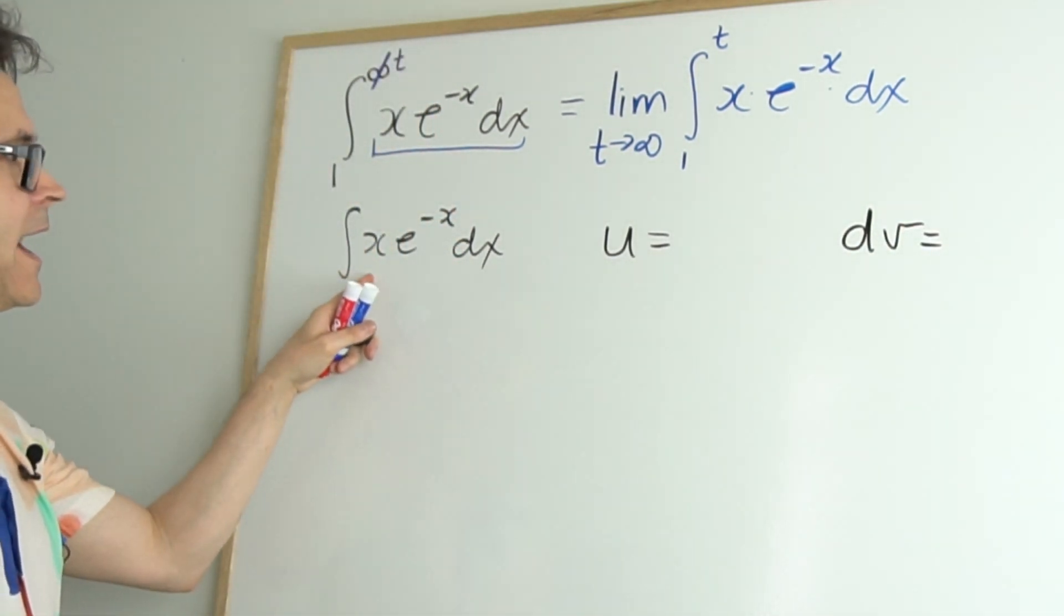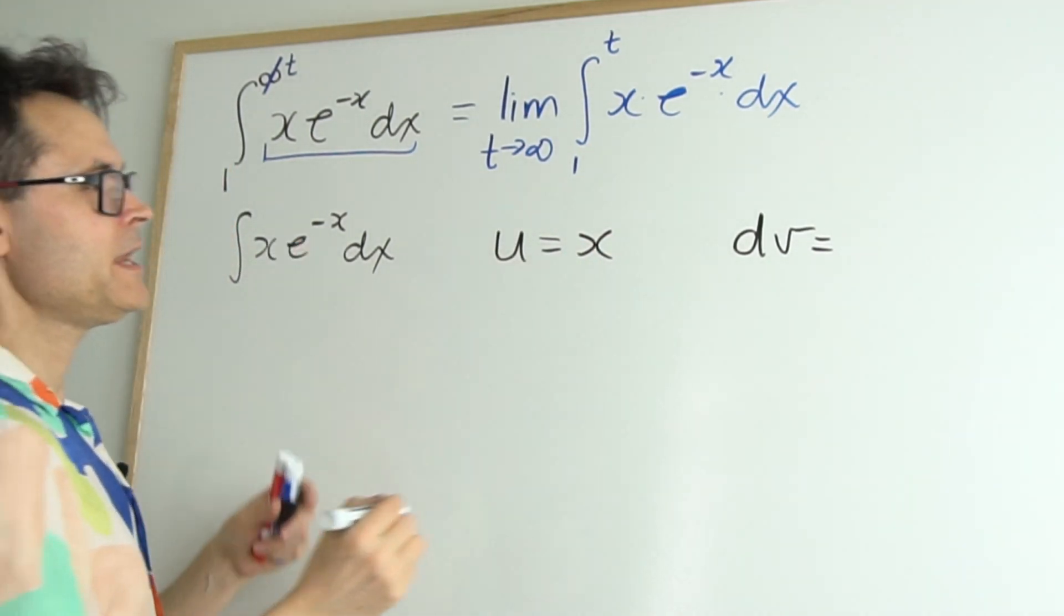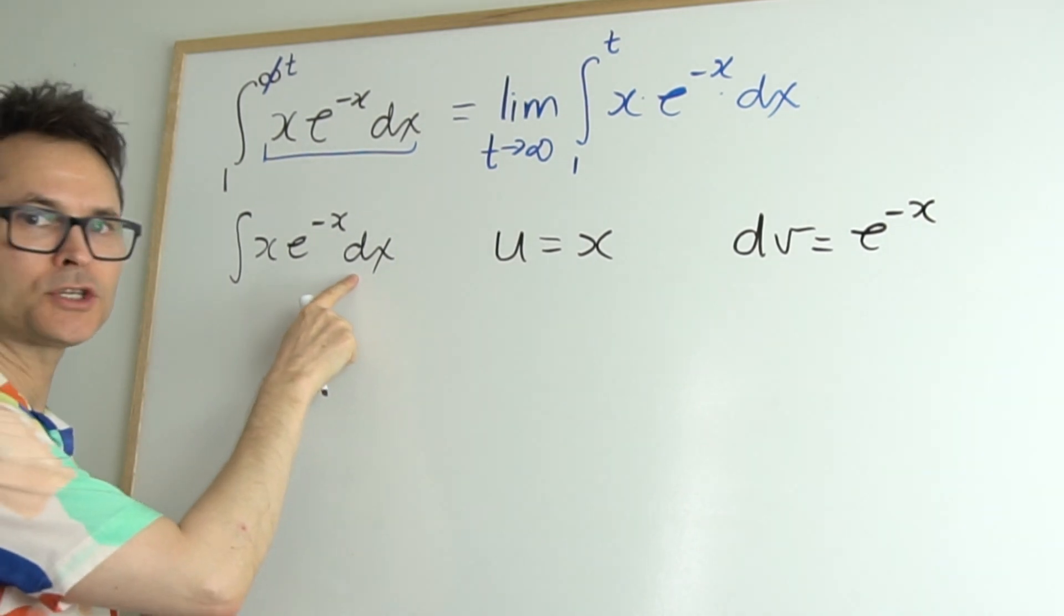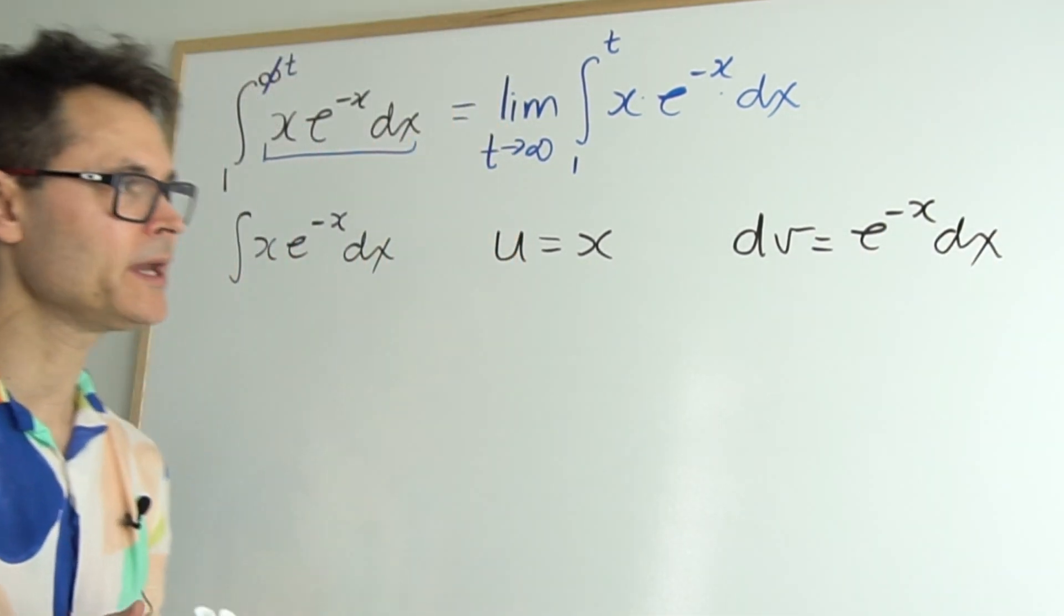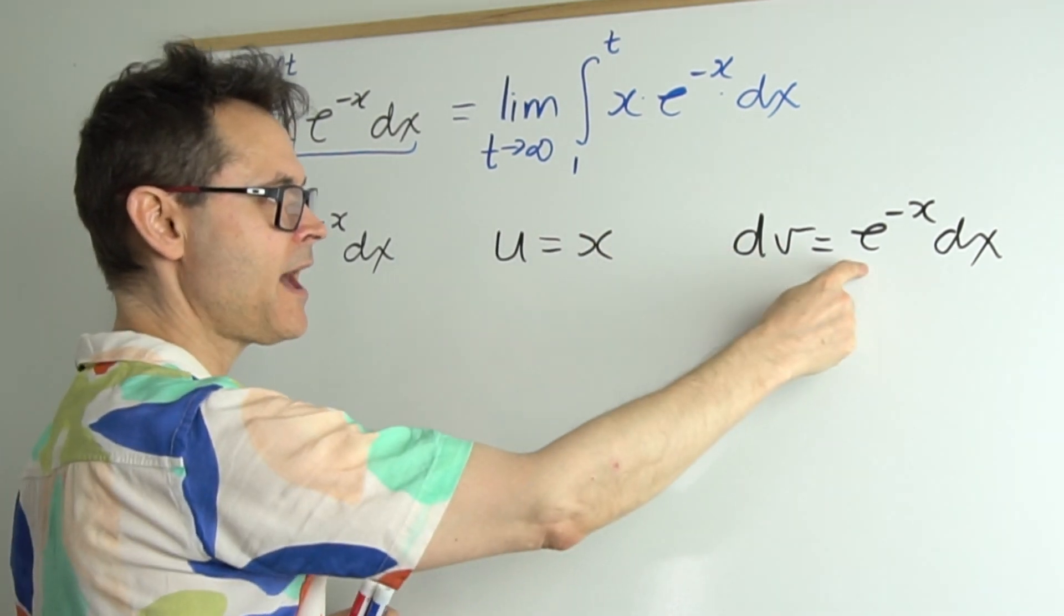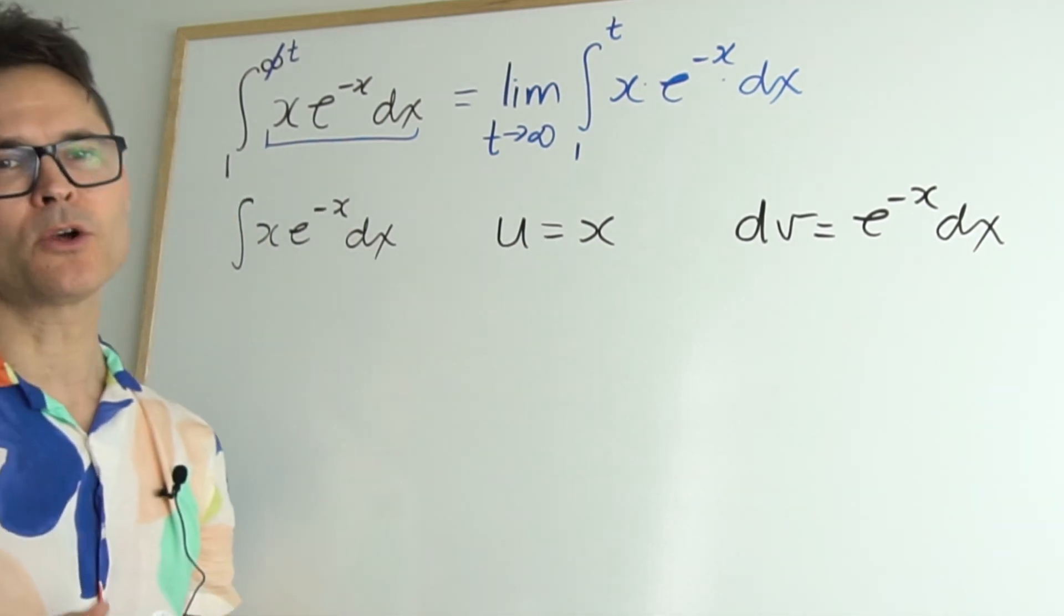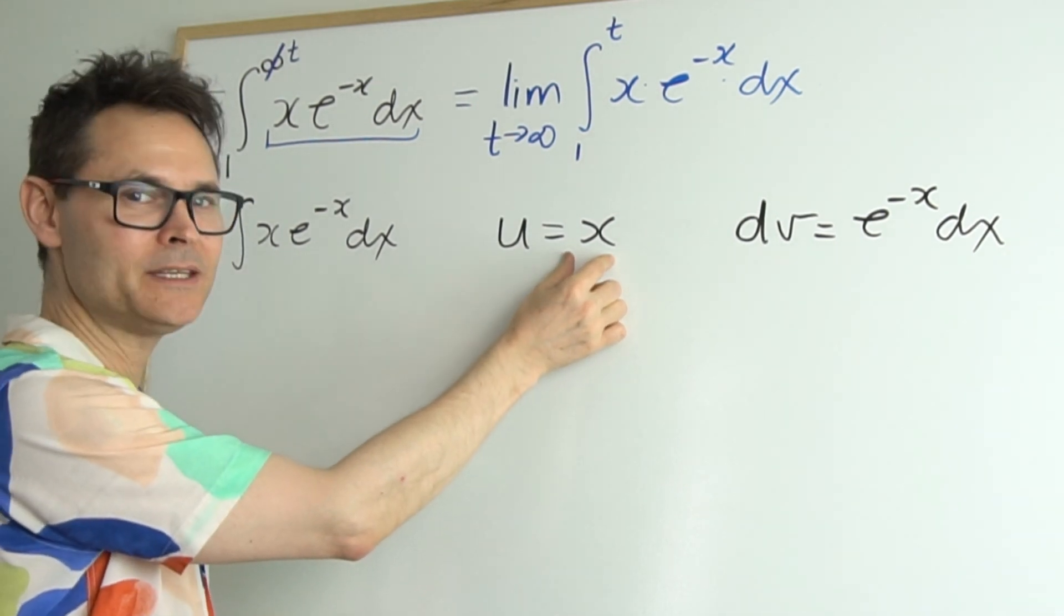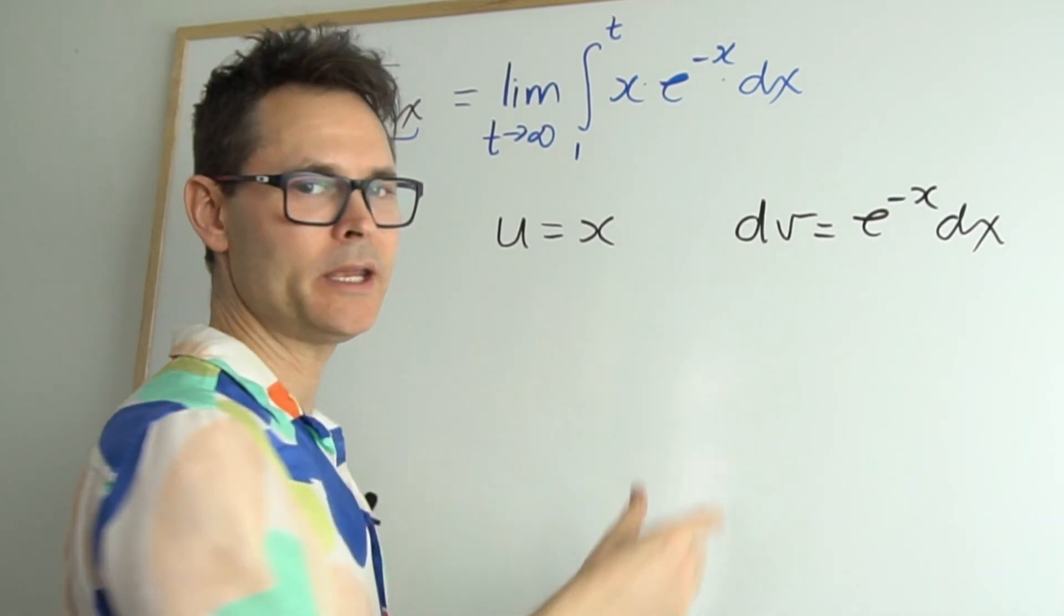So we'll let part one part be a u and another part be a dv a differential. So I'm going to let the x be the u and the e to the negative x e to the negative x. Don't forget to take this differential and put it with the other differential so it allows you to integrate. If I switch those if I made this e to the negative x and this x I'm going to encourage you to try that if you haven't already. But this is the better way to go. So I'm going to make the polynomial the thing that I take the derivative of and the exponential the one that I integrate.